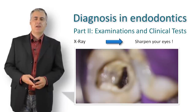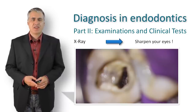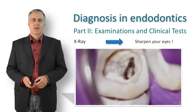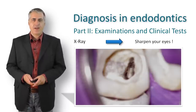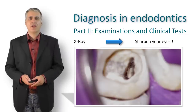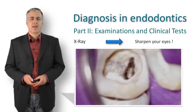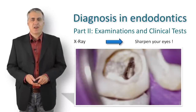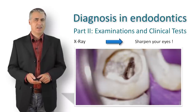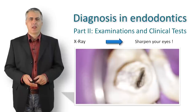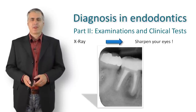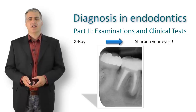As expected, an open apex was present in the distal root canal. To prevent overfilling of MTA into the periapical tissue, some resolvable collagen was placed, though this is not absolutely necessary as a small amount of overpressed MTA is not problematic. The apical part was then filled with MTA, as seen on the final X-ray.